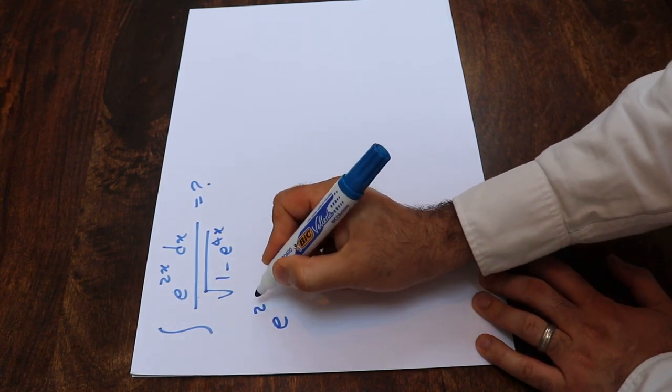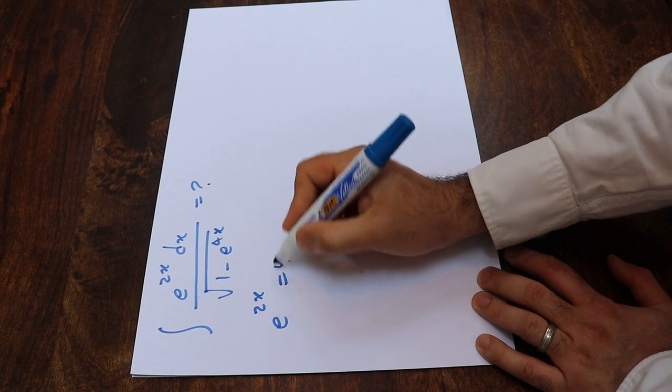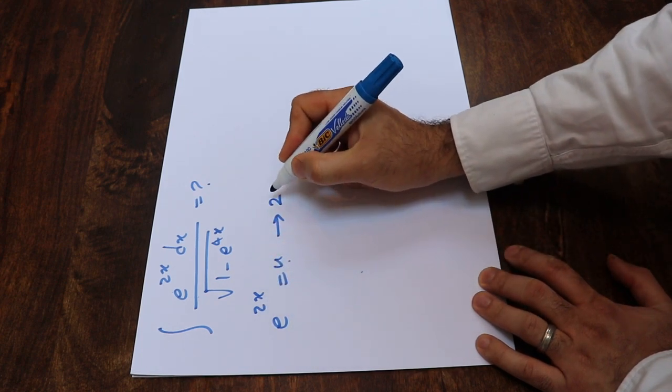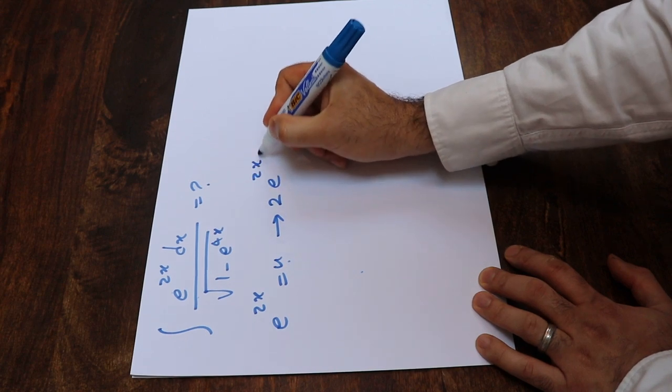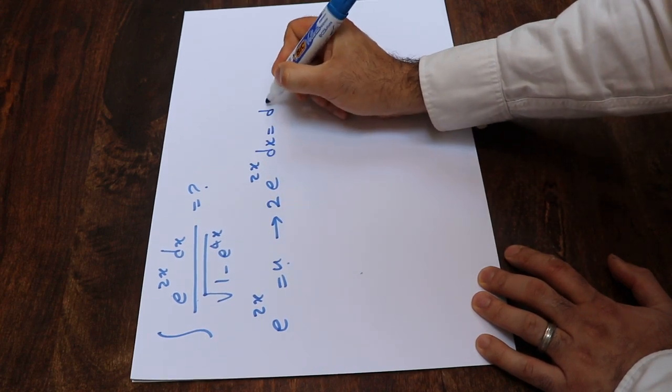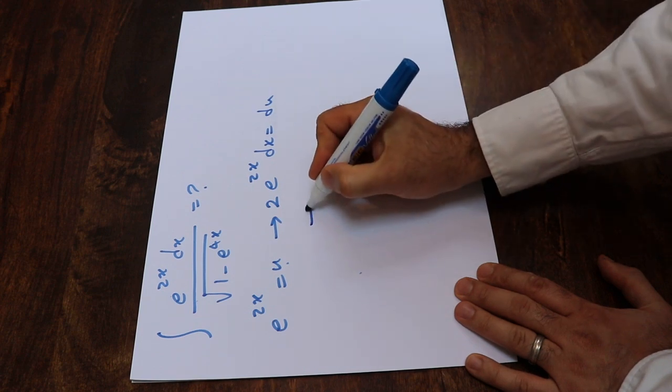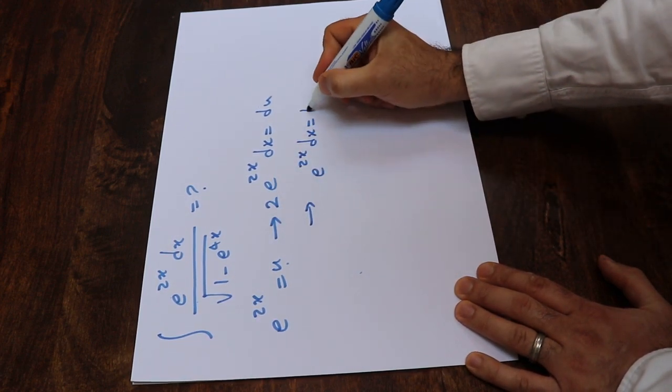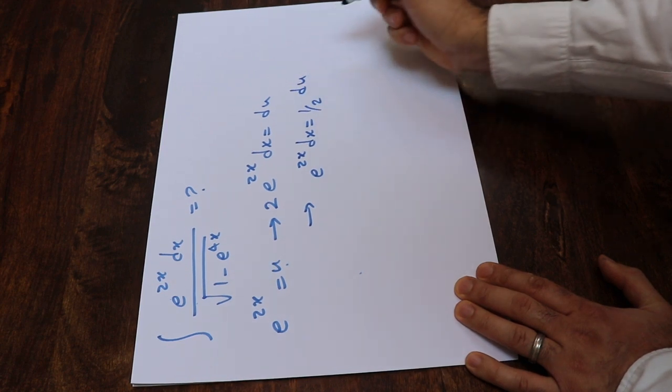So if you define e^(2x) as u, and if you take the derivative of each side of this equation, that will be equal to 2e^(2x) dx equals du. So now from here, you can conclude that e^(2x) dx is equal to 1/2 times du.